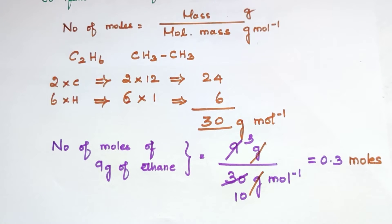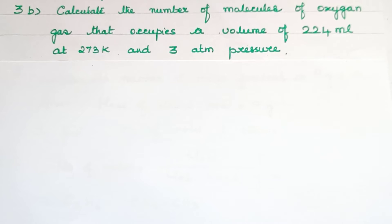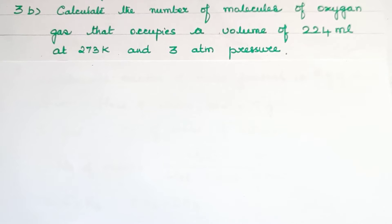Now let us move on to the second question, 3B: Calculate the number of molecules of oxygen gas that occupies a volume of 224 mL at 273 K and 3 atm pressure.